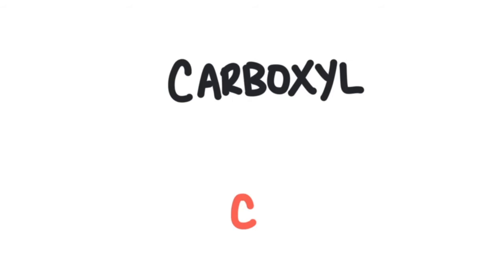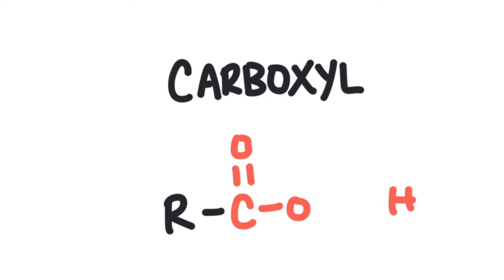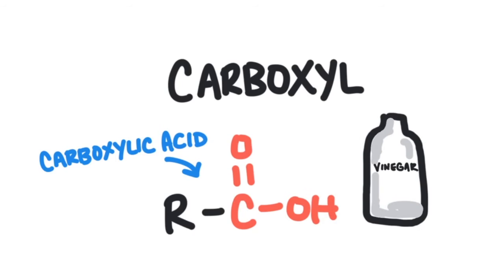Next is the carboxyl group. This group consists of a carbon atom that is double bonded to an oxygen atom, but also bonded to a hydroxyl group. The hydrogen on the hydroxyl group can be removed from the compound as a hydrogen ion, which means these compounds are acids. Compounds that contain a carboxyl group are called carboxylic acids. Vinegar, also known as acetic acid, is an example of a compound that contains a carboxyl group.